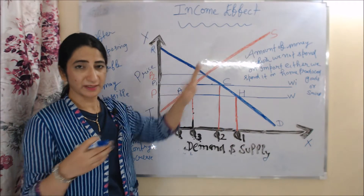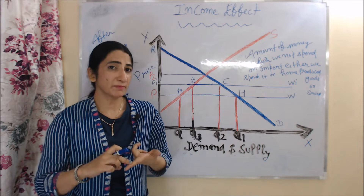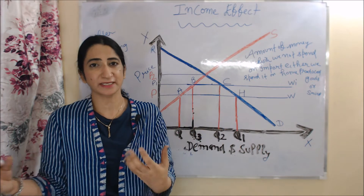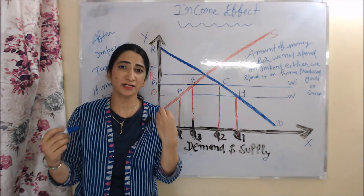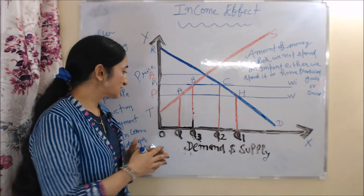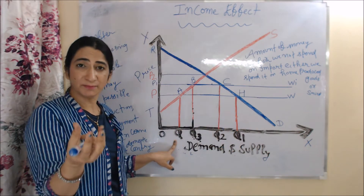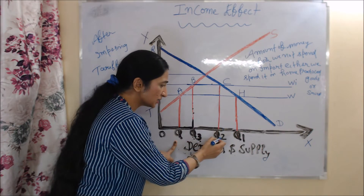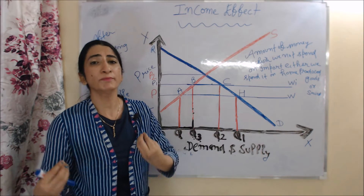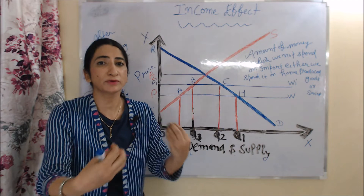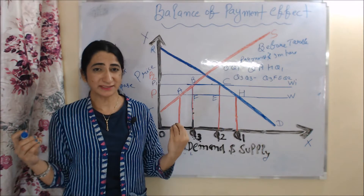We will see the income effect. Income effect basically says that after imposing tariff, it may be possible that production, employment, and income of our domestic country will increase. Before imposing tariff, our import was OQ1, but after imposing tariff our import falls — now we have only Q3Q2 import. The money that we do not spend on import, either we spend on home-produced goods or save. If we spend our money on home-produced goods, it can cause increased production, employment, and income of our domestic country.